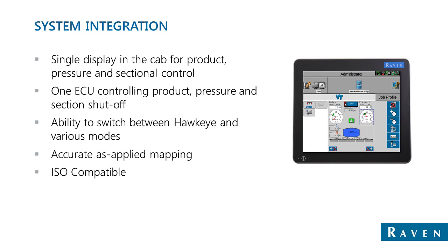You get the ability to switch between Hawkeye and the other various modes. There's one dropdown selection that displays all five modes. Anytime before you enter a job, you can select which one you want to be applying in. It's accurate as-applied mapping — the one Hawkeye ECU registers all the information and reports it back to the VT. No need for two rate control modules. And it's ISO compatible, so any VT can operate the system.